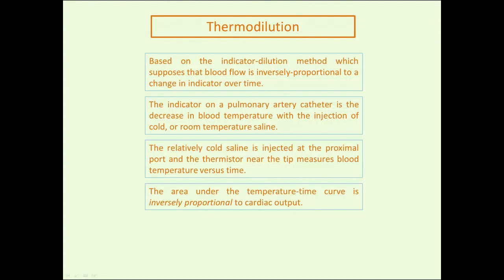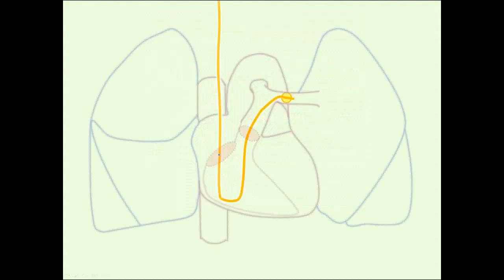If the area under the curve is low, cardiac output is high. If the area under the curve is high, cardiac output is low.